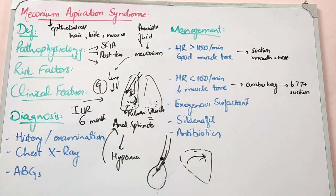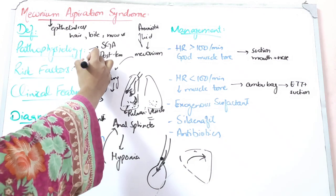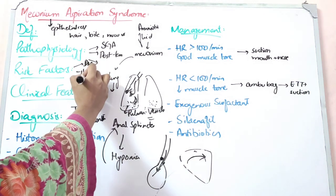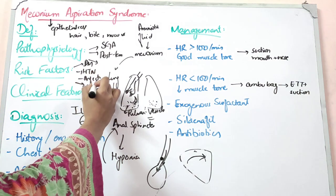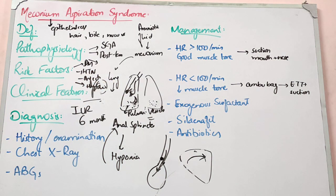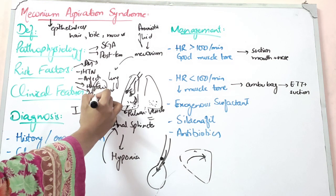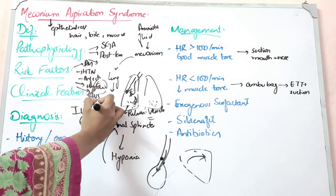In clinical features, you should ask about maternal risk factors: post-term pregnancy, large or small for gestational age, maternal diabetes, maternal hypertension, maternal infections, maternal hypoxia, heavy maternal smoking, or severe maternal respiratory diseases. All of these increase the child's risk for meconium aspiration syndrome.